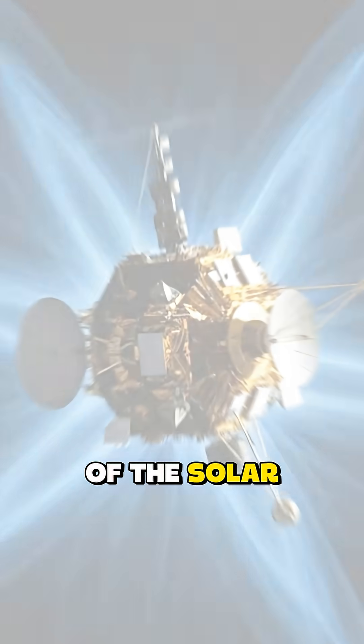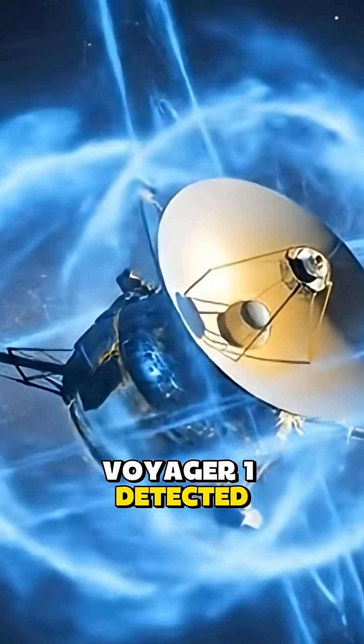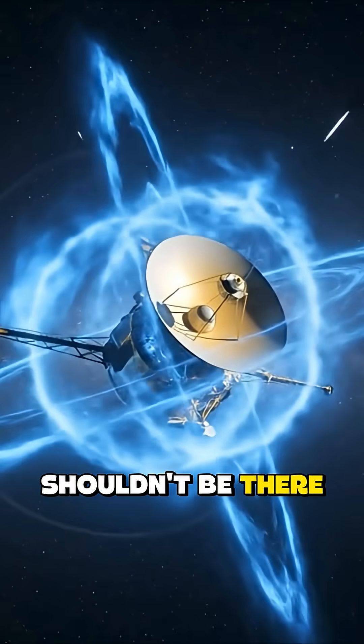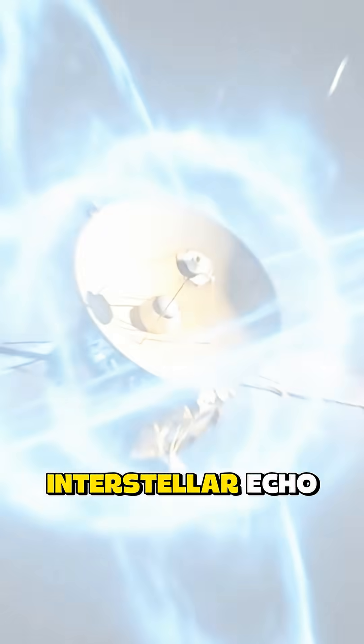Something strange happened at the edge of the solar system. Voyager 1 detected a signal that shouldn't be there, a faint rhythmic interstellar echo.